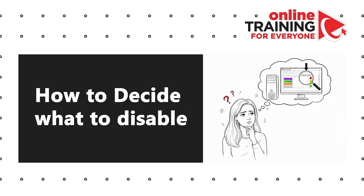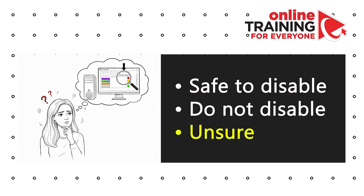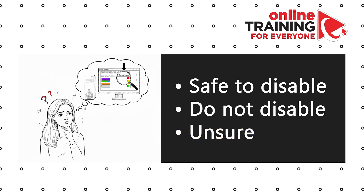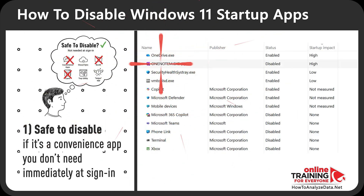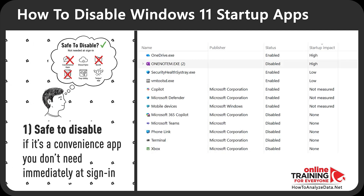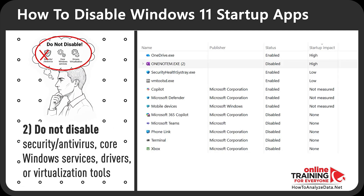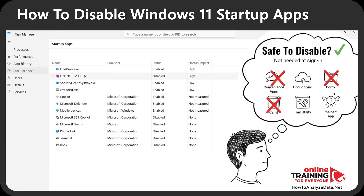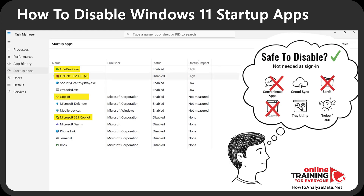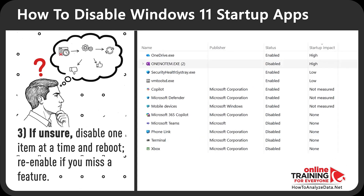There are three important categories: Safe to Disable, Do Not Disable, and Unsure. Apps that are safe to disable include convenience apps like chats, cloud sync, tray utilities, or helpers — you don't need them immediately on sign-in. In the Do Not Disable category, I'd place security/antivirus tools, core Windows services, drivers, and virtualization tools. For example, OneNote, OneDrive, and Copilot go in the first category, while Microsoft Defender and Windows Security Health SysTray belong in the second.